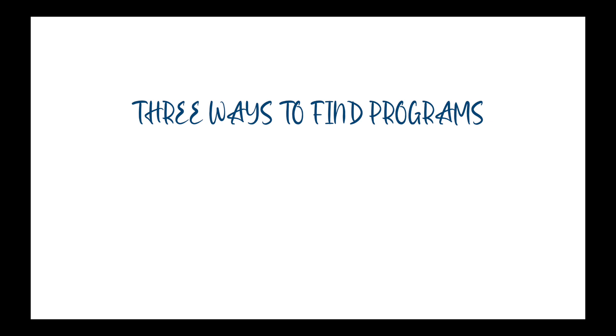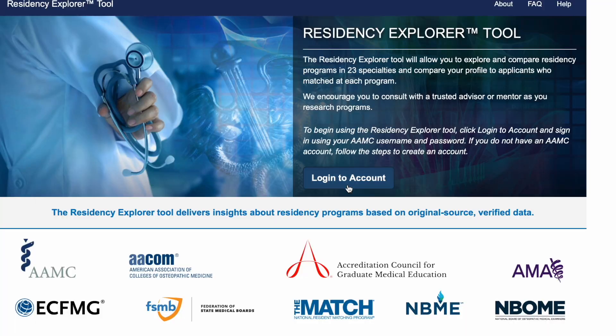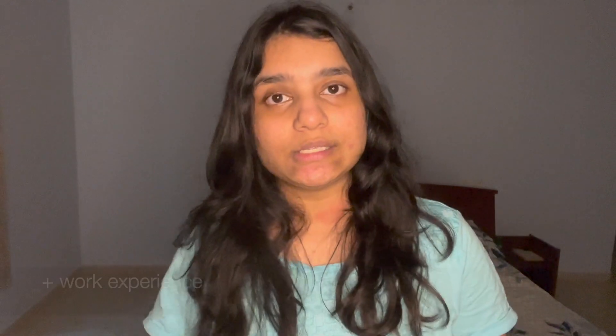There are basically three resources that I use to find residency programs. The first one is Residency Explorer. All you have to do is go to their website and create an account. Once you create an account, it will ask you to enter your details — basic stuff like your step scores, the number of volunteer experiences, research experiences, and your citizenship status. I had a 232 in Step 1 and a 240 in Step 2, and about 10 volunteer experiences and around two research experiences.